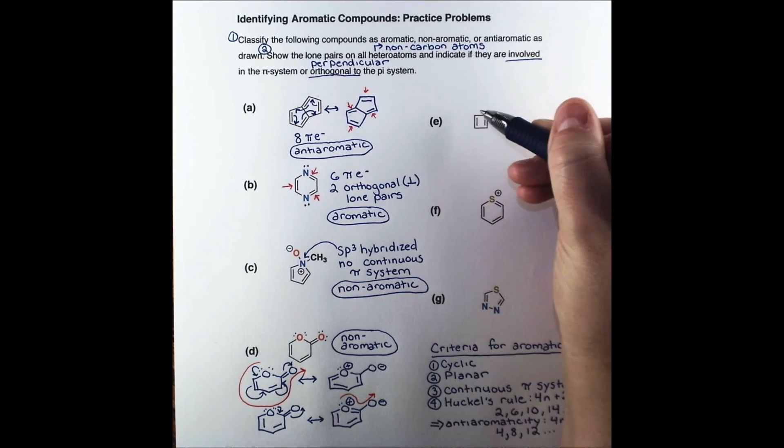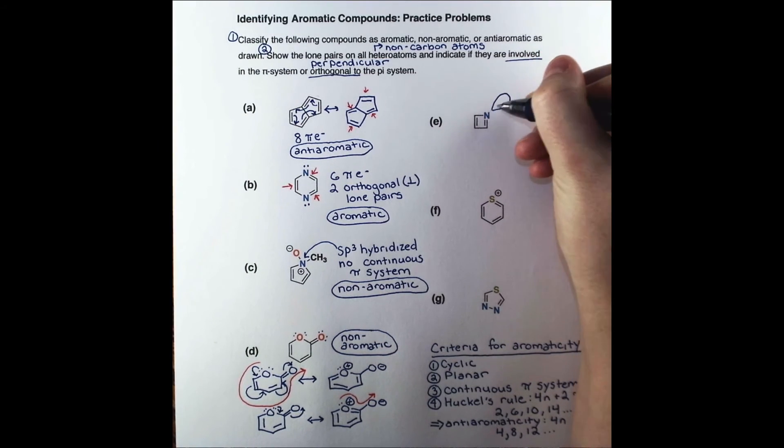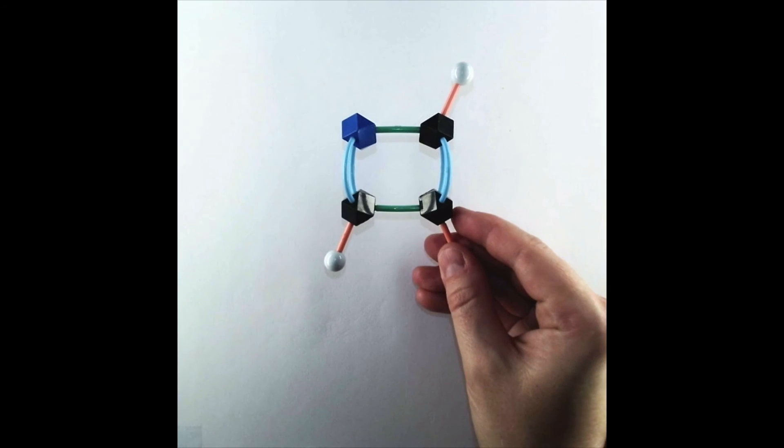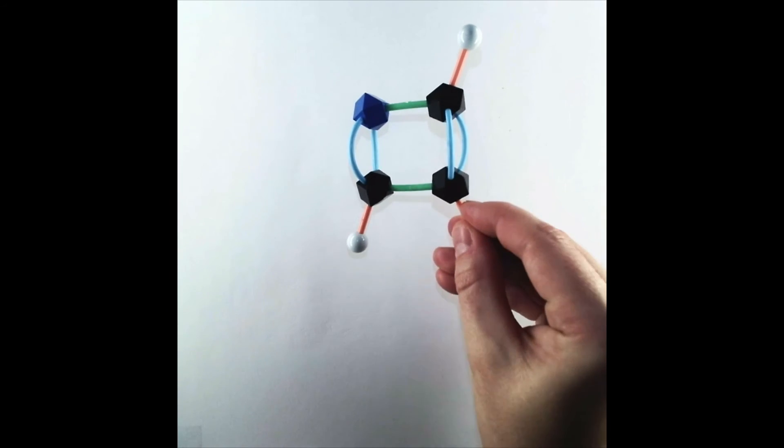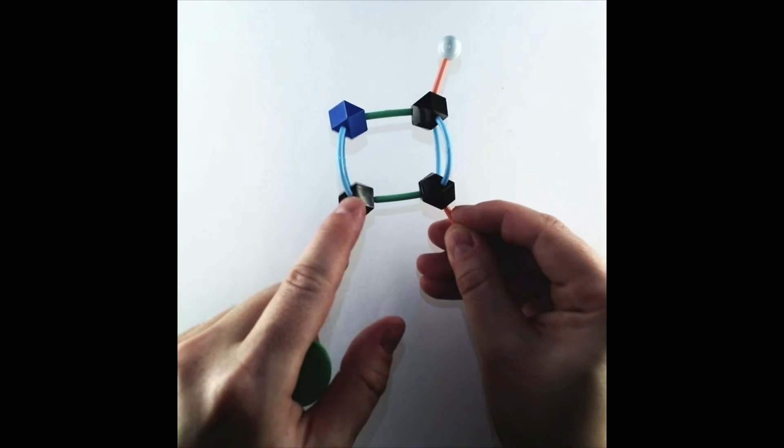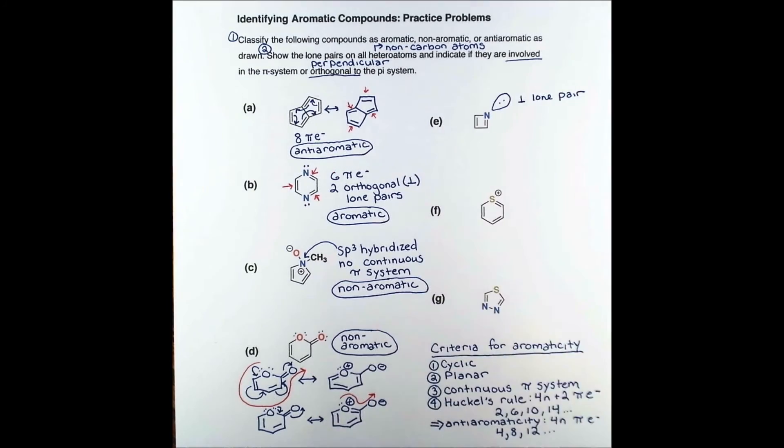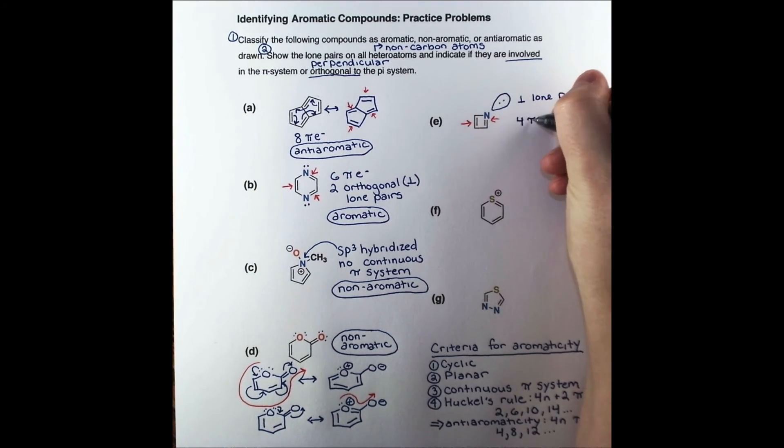In compound E, we again have an sp2 nitrogen with an orthogonal lone pair. If we look at the model of this compound, it is so strained that the double bonds are bending, but it certainly is planar. Since two double bonds make up the pi system, this is an anti-aromatic compound.